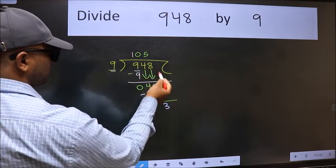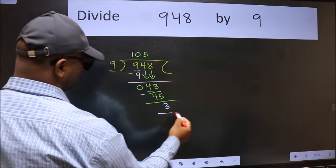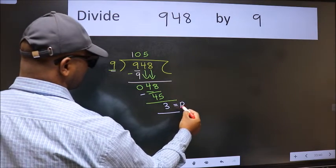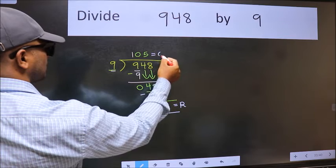No more numbers to bring down. So we stop here. This is our remainder and this is our quotient.